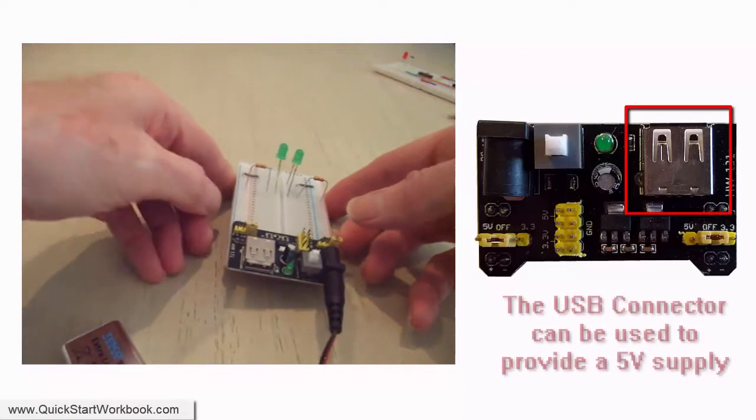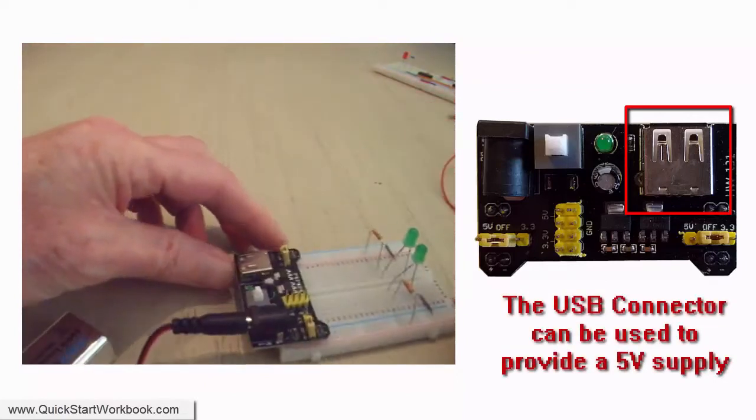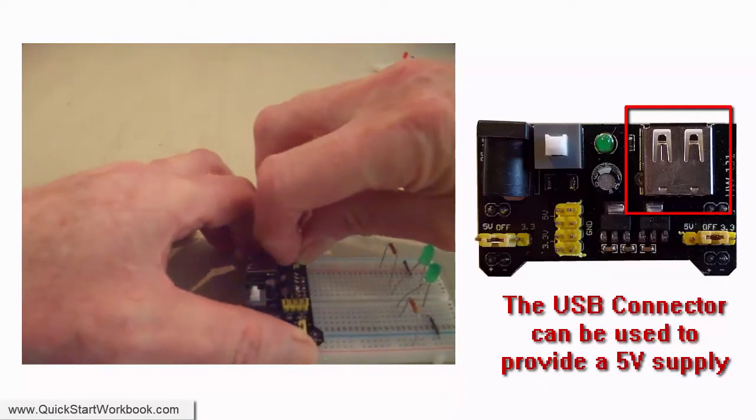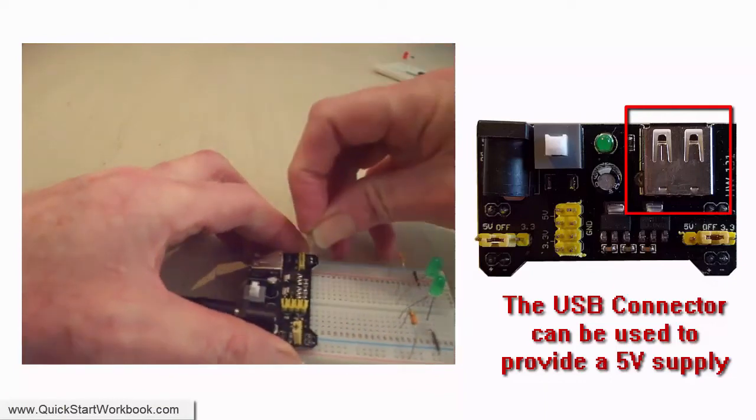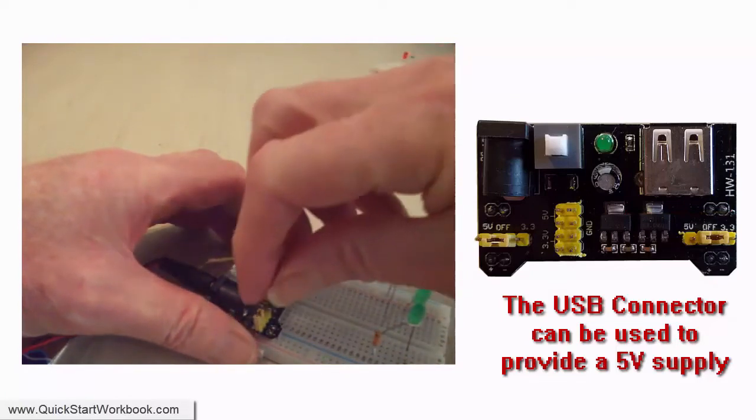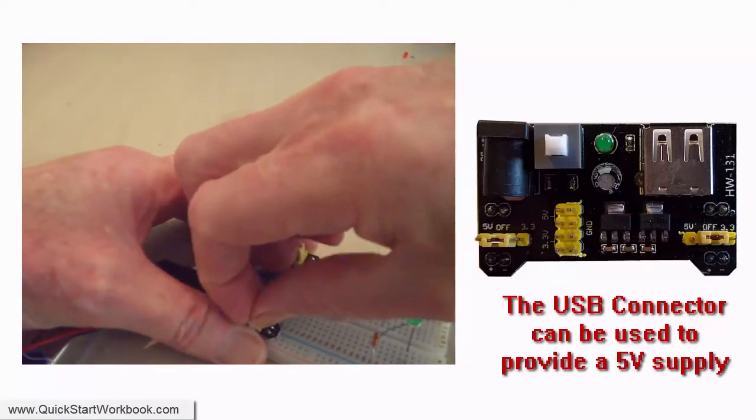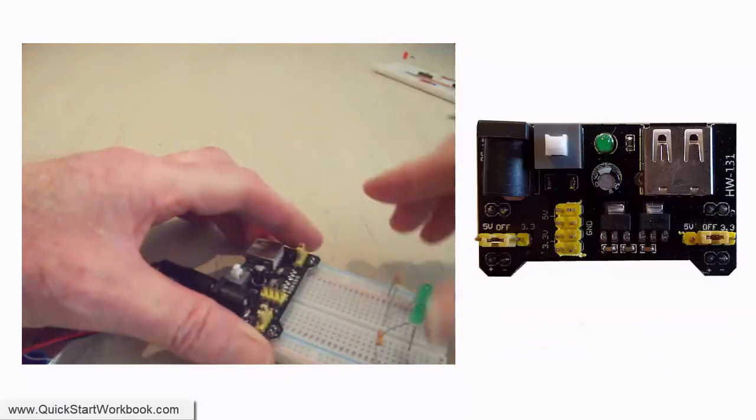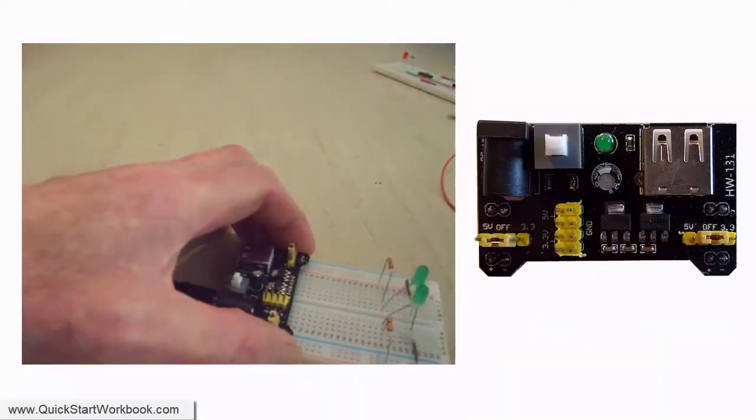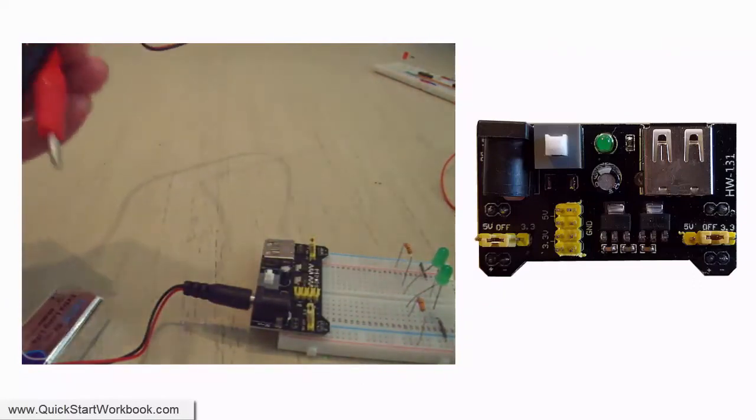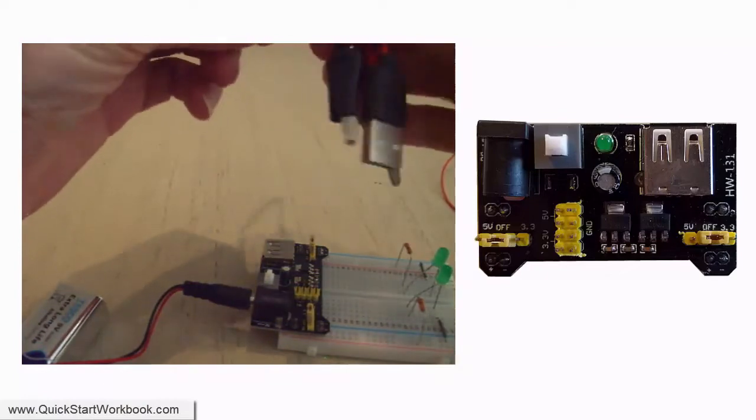The USB connector can be used to output power from the module. I'm just setting both jumpers to the off position. By doing this, the module is no longer supplying any power to the breadboard's rails. There's no real need to do this. I just want to show that I'm using the USB connector to supply power, and that the 3.3 and 5 volt supplies are not being used anywhere.